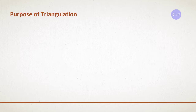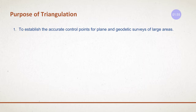Now, what are the uses of triangulation — why do we use the triangulation system of survey? The first purpose is to obtain accurate points for plane and geodetic survey of a larger area. In the case of plane triangulation surveying, there are many other surveying methods to calculate the area, but in the case of geodetic surveying it is very difficult to use other systems. Triangulation is the best and most appropriate method in geodetic surveying.